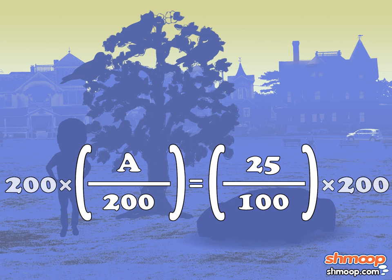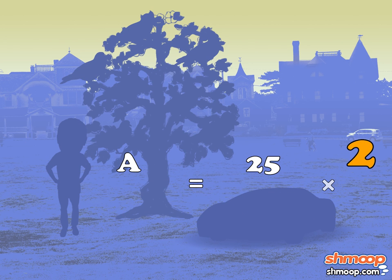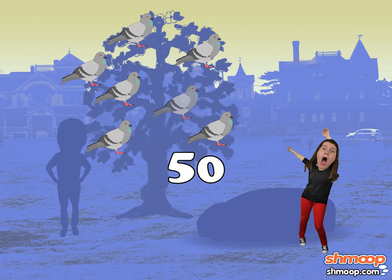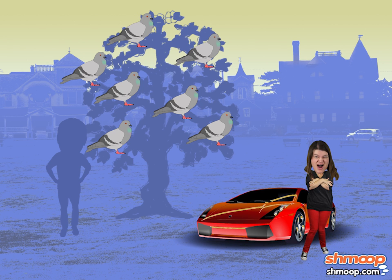Multiply both sides by 200, and we get a equals 25 times 2, which simplifies to 50. So 50 pigeons poop on Candace just as she exits the car. Candace just can't catch a break.